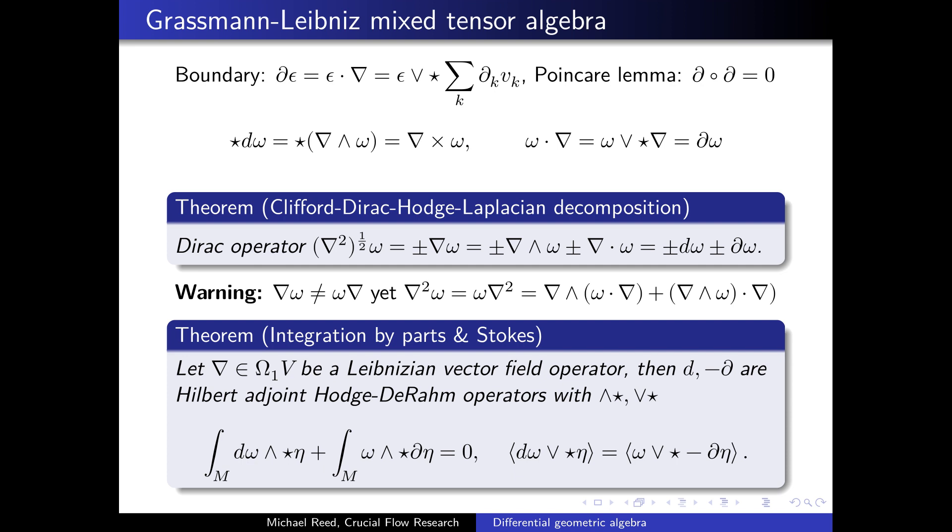There's actually two parts to this theorem. I've combined them into one. There's this integral theorem with the integral over M of D omega times the wedge product of the complement of eta, plus the integral over M of omega wedge boundary of the complement of eta, and that equals zero. Another similar expression takes the inner product of D omega and eta and omega and the boundary of eta, equating these as a scalar product expression.